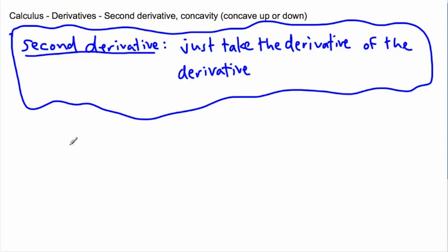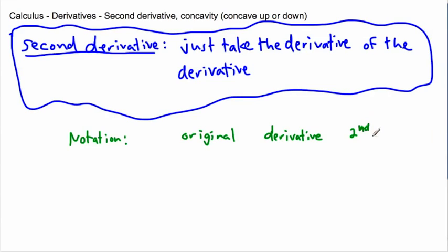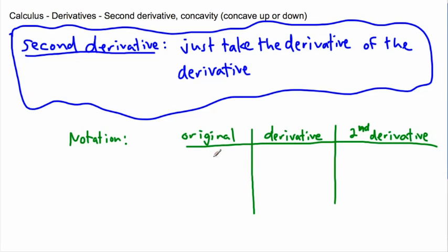Let me show you something with notation. I'll write the original, then the first derivative, then the second derivative. There are three main ways of writing these things. If we write an equation y equals something, we can write the derivative as y-prime — that little mark tells you about the slope or gradient of the graph. If we want to write the second derivative, we write y double-prime.